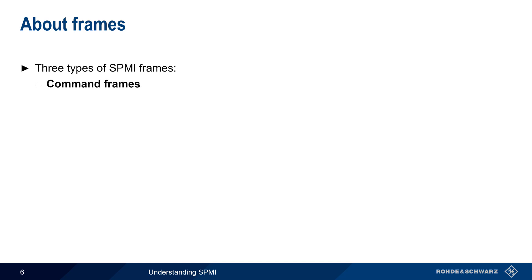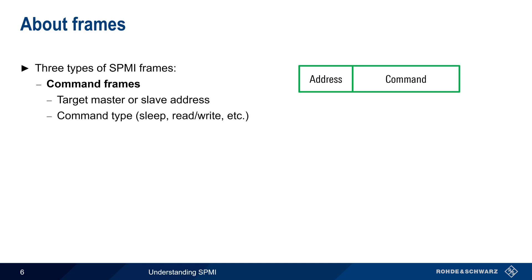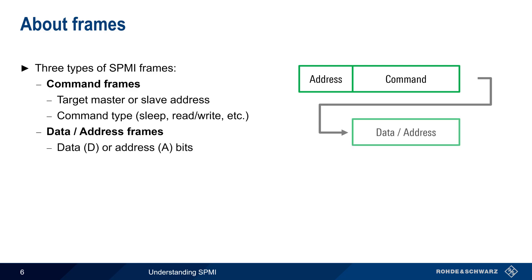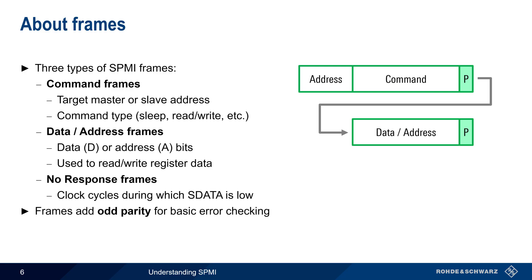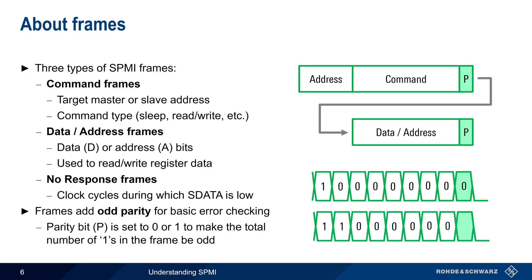There are three different types of SPMI frames. The first is command frames, which have a target master or slave address, followed by a command type such as sleep, reset, read, write, etc. Some command frames are then followed by data or address frames, which contain a register address or register data. There is also a so-called no-response frame, which is just the data line being held low for a certain number of clock cycles. Both the command frame and the data or address frames have an additional parity bit for error checking. SPMI uses odd parity, which means that this bit is set to 0 if the frame contains an odd number of ones, and is set to 1 if the frame contains an even number of ones.